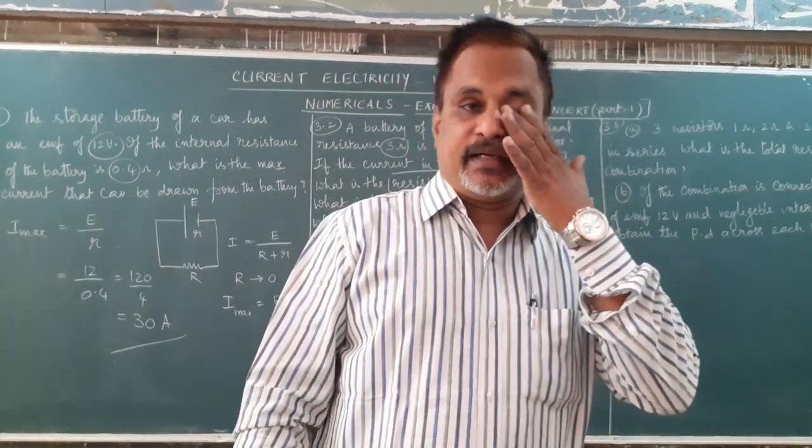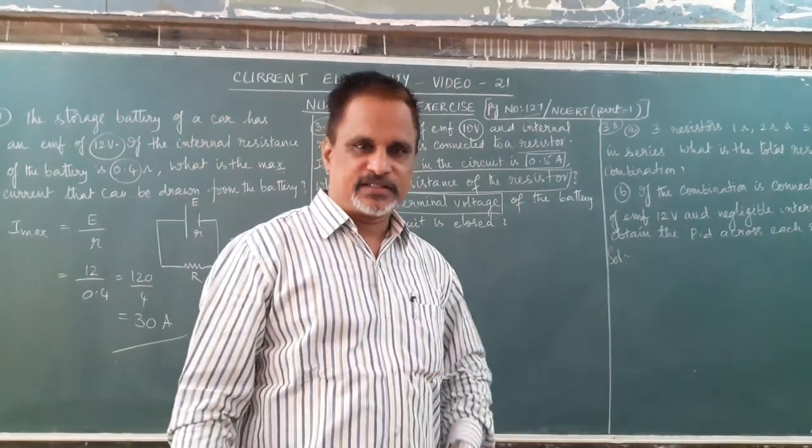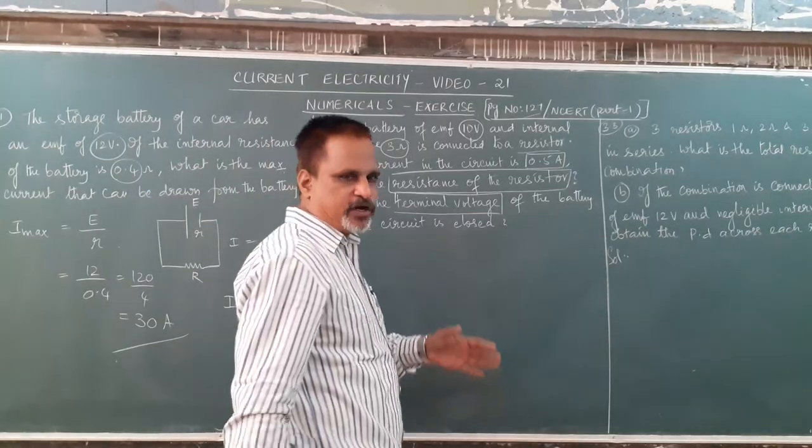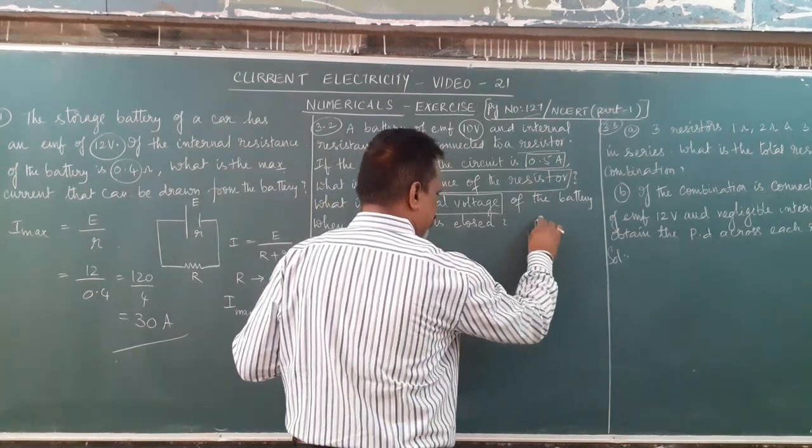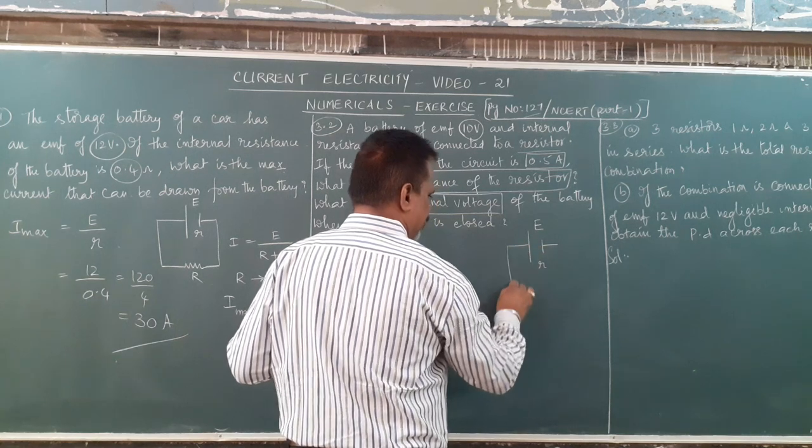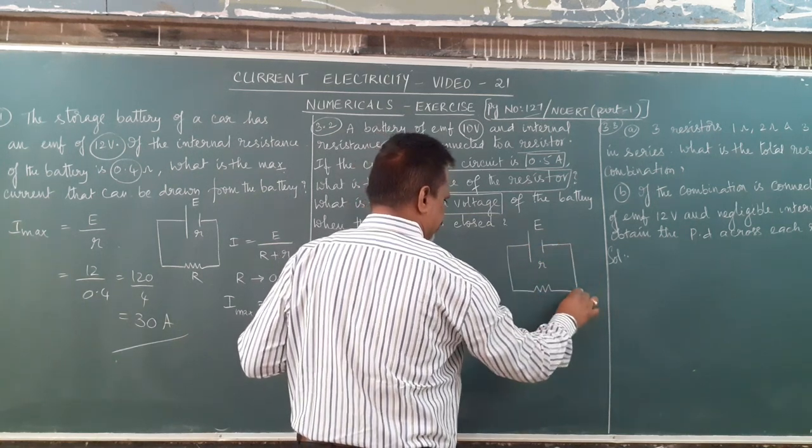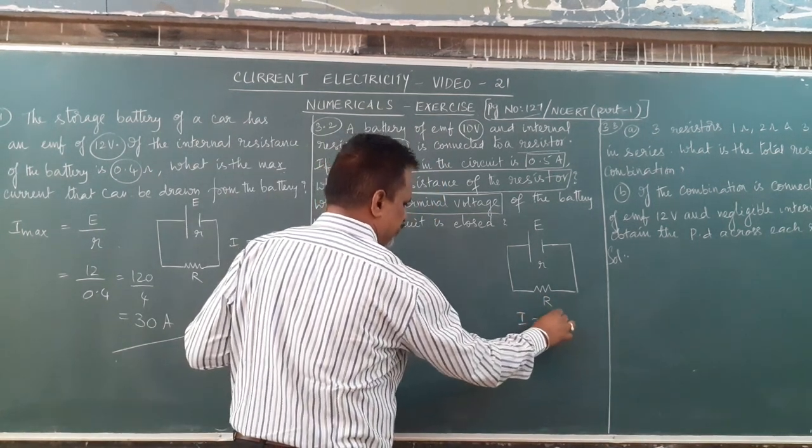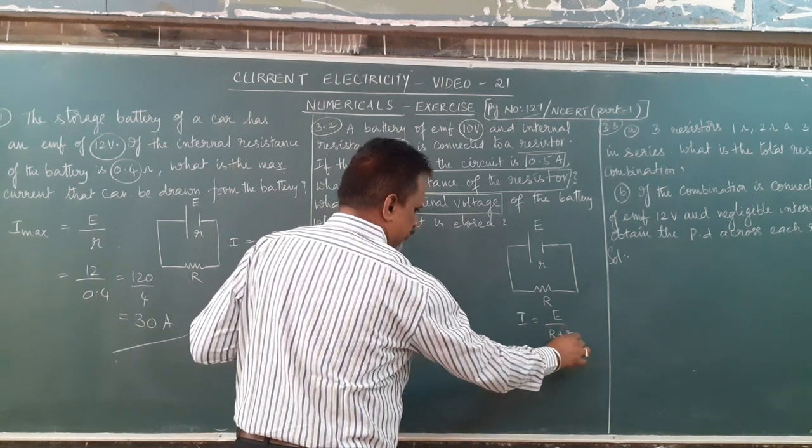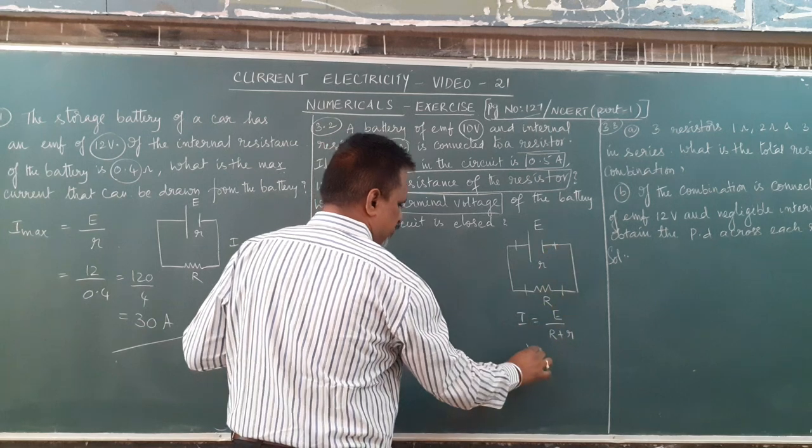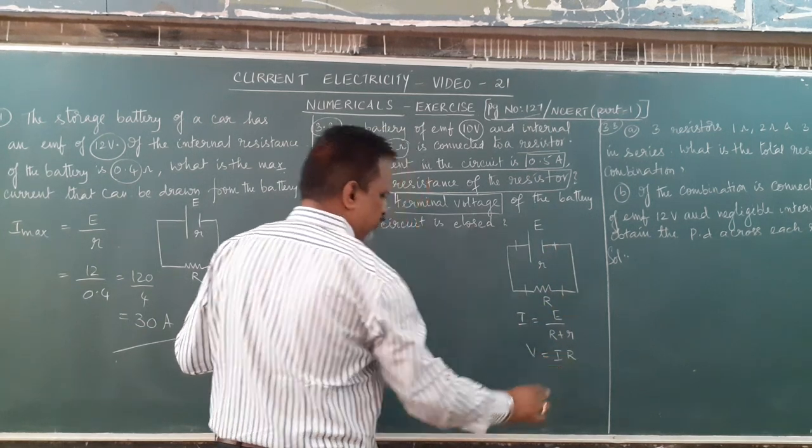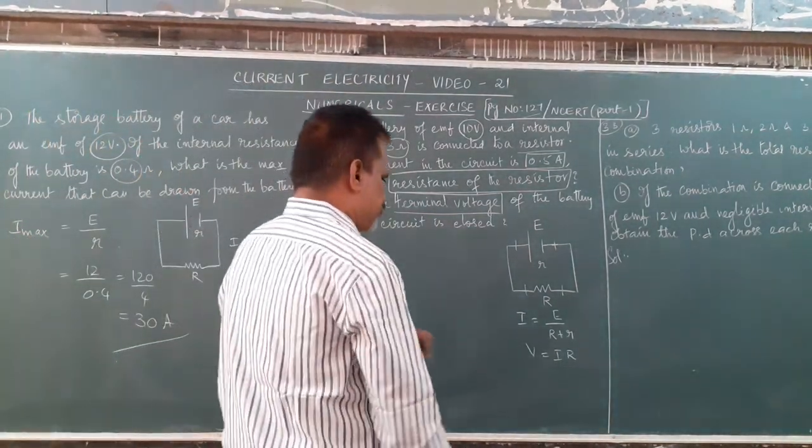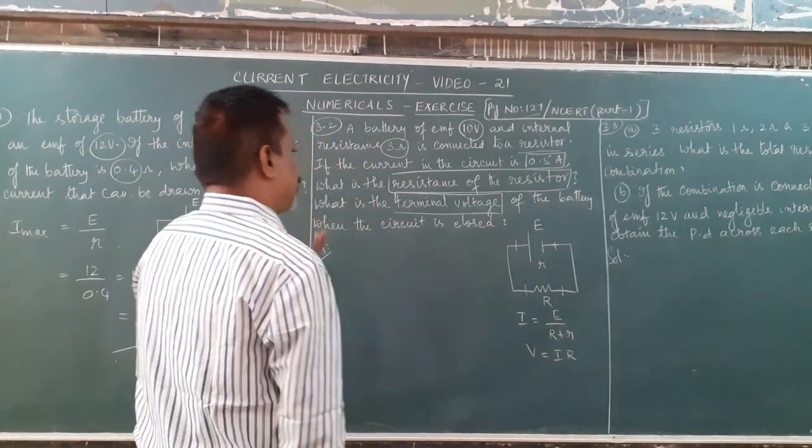For doing numericals, in one of the videos of current electricity, I have given you some formulas. Let us go for the formula. The formula for terminal voltage is V equal to IR. For the two parts given in the numerical, the first formula is I equal to E by R plus r.